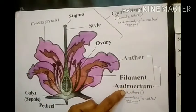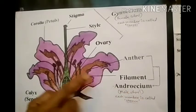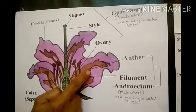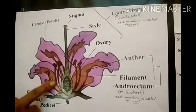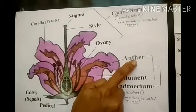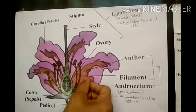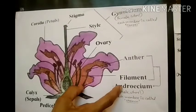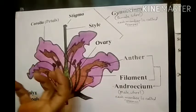The third part is the androecium, called the male whorl. Each androecium consists of many stamens. See here — each stamen has one anther at the upper end and a filament at the lower side. Many stamens come together to form the androecium.